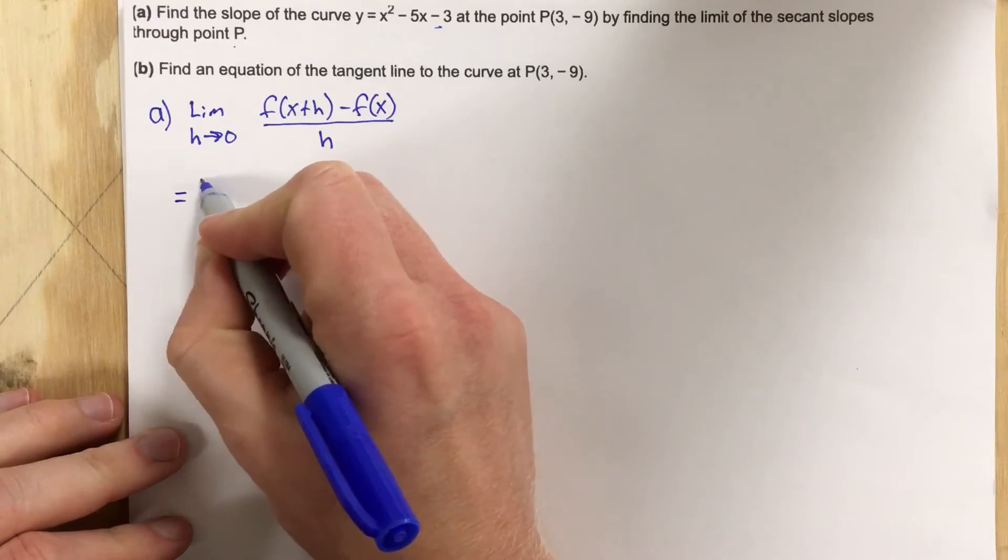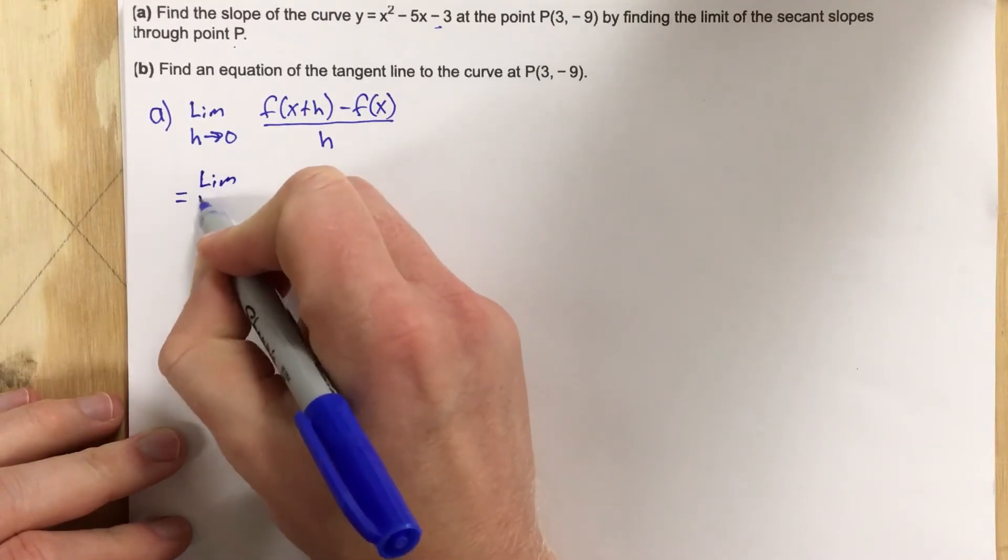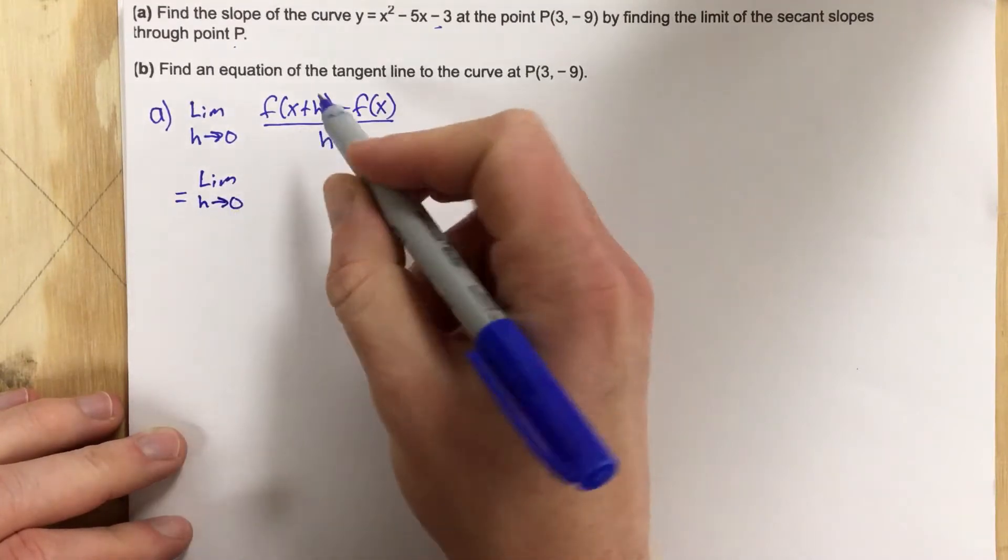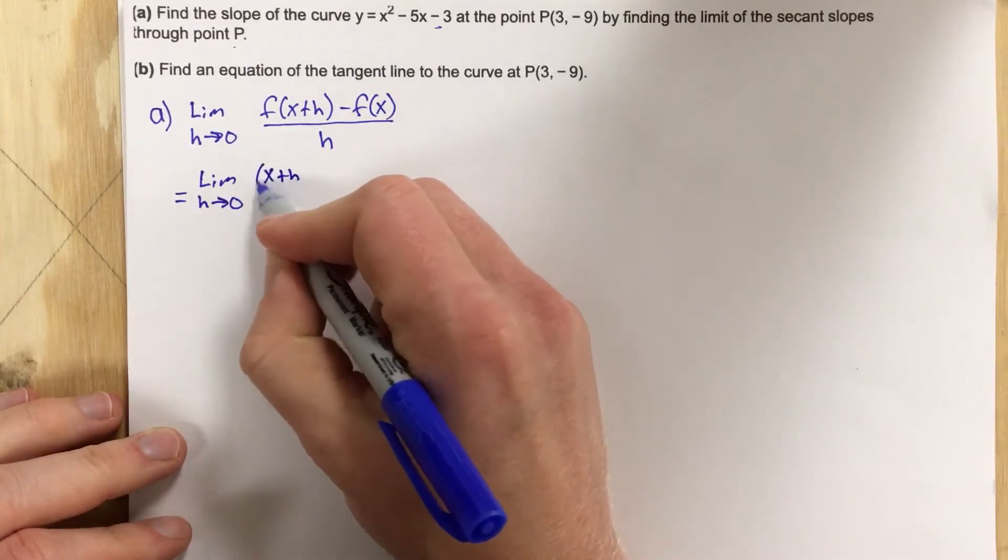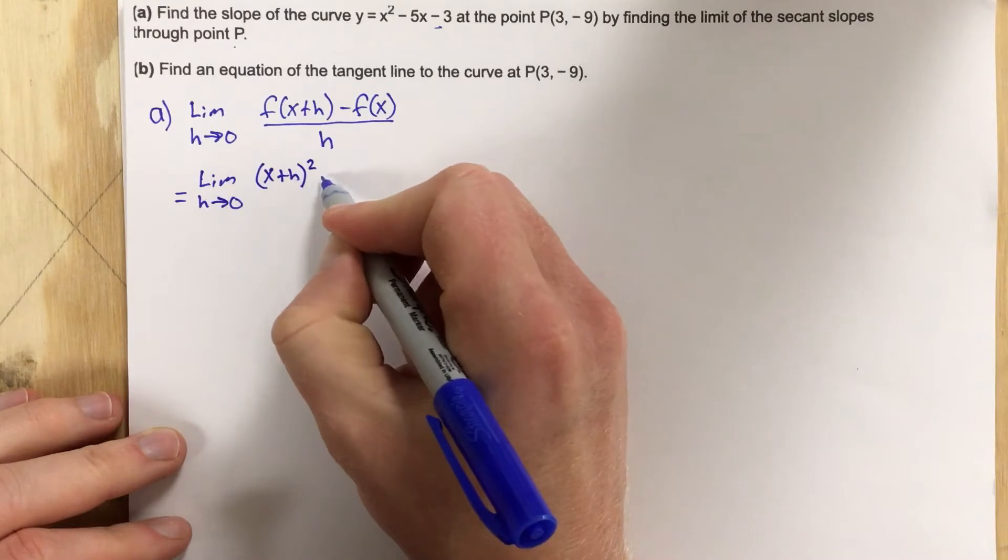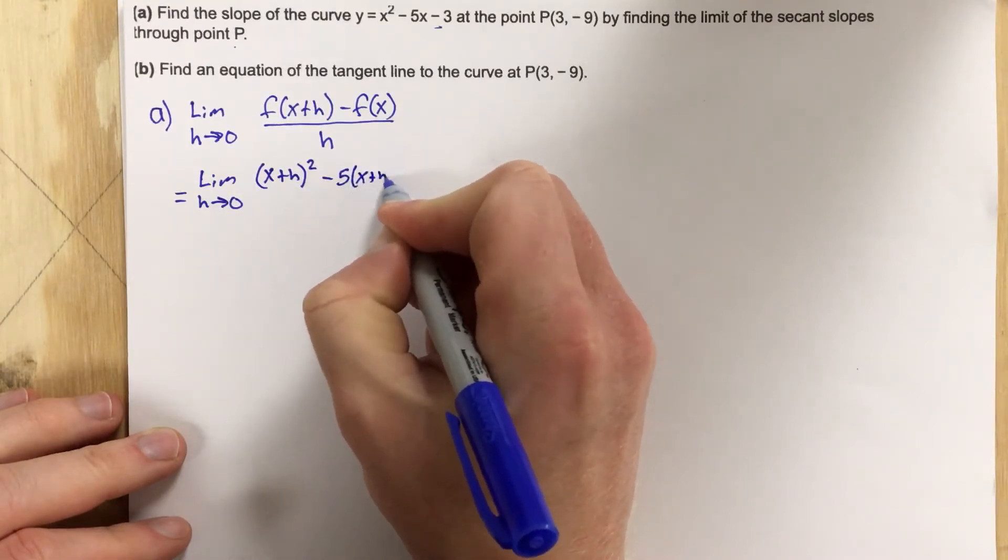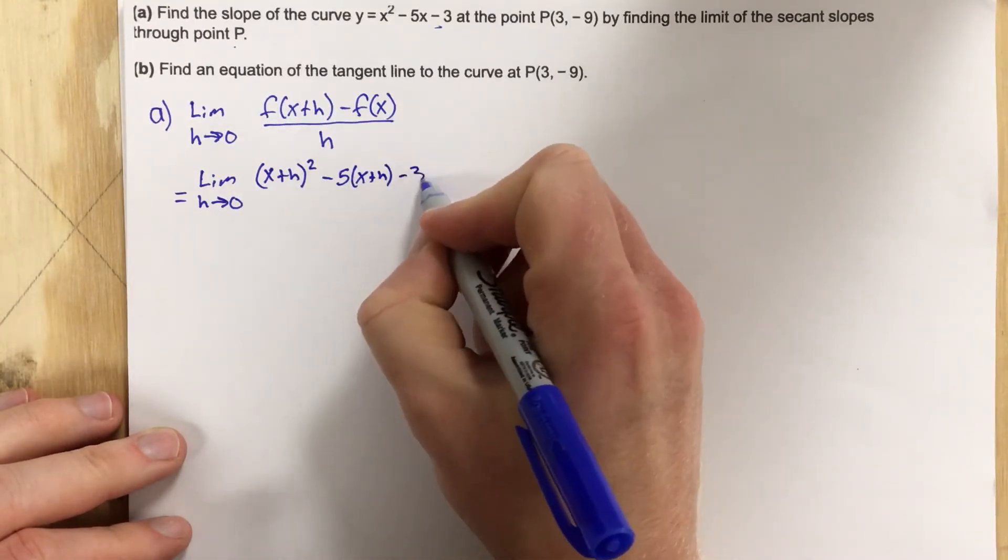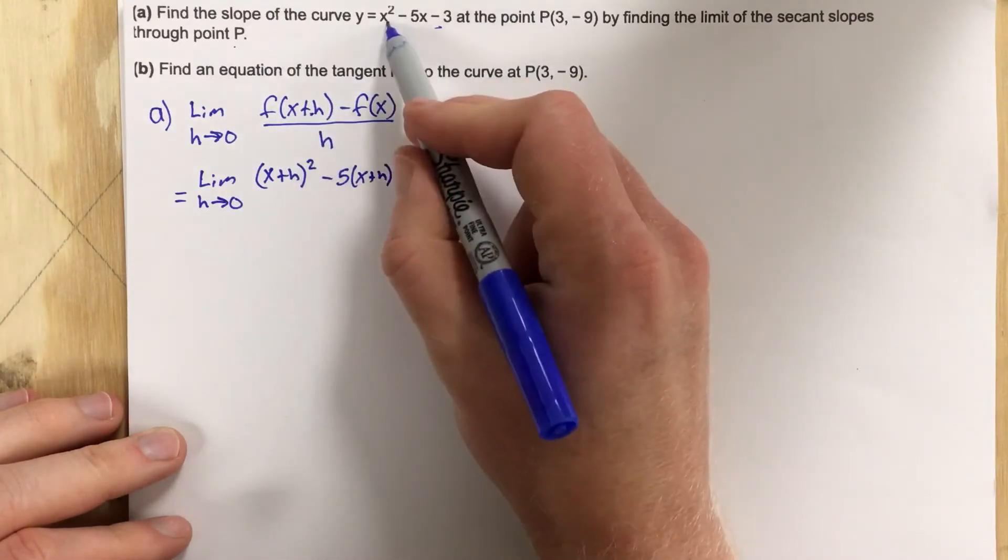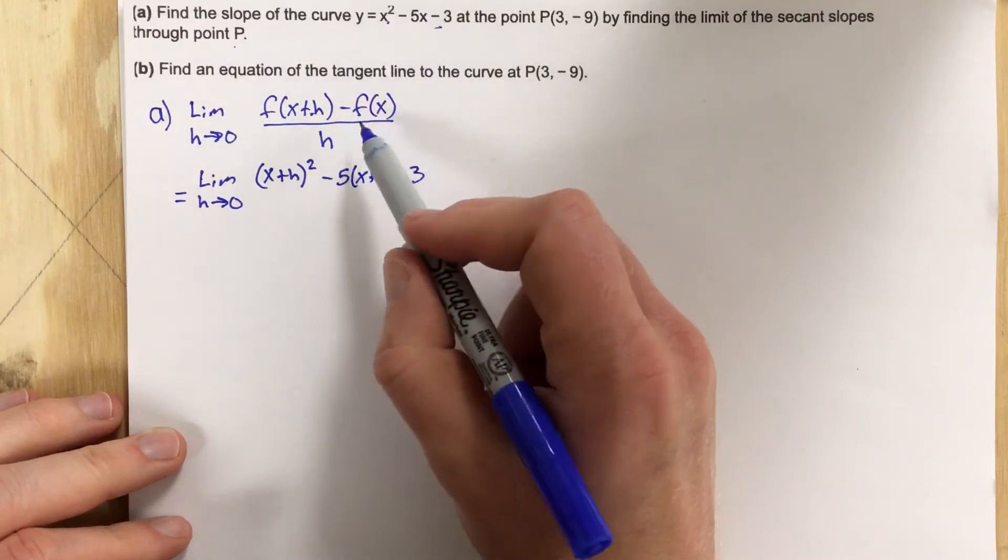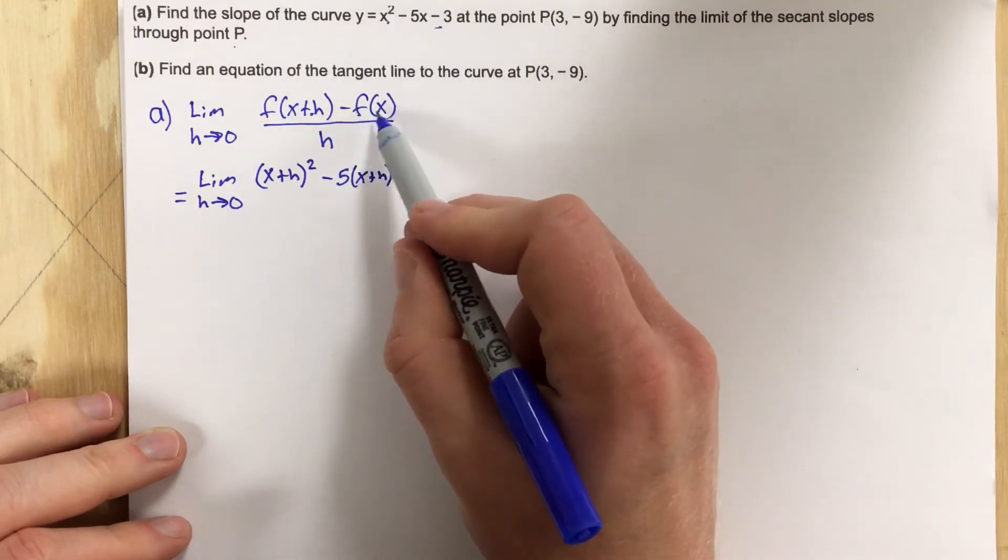We're going to say that equals the limit as h approaches 0, and we're going to say (x+h) squared minus 5(x+h) minus 3. That's just the f(x+h) part. I plug this in for the x and this in for the x here.